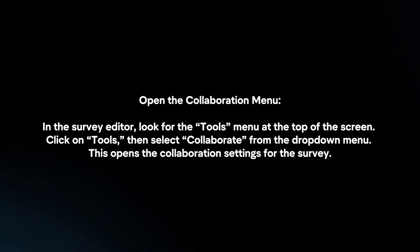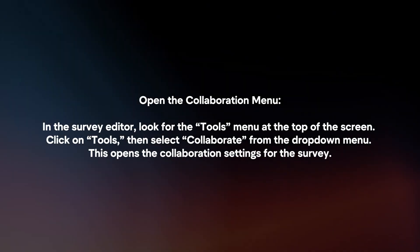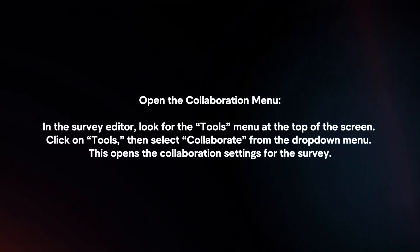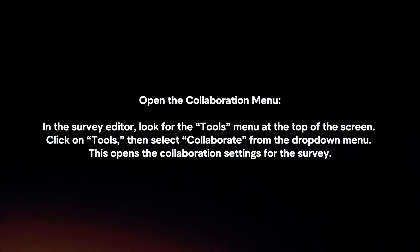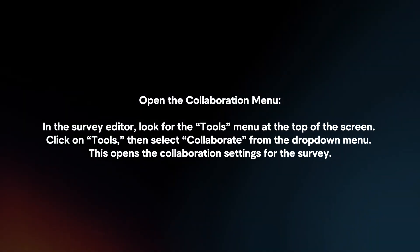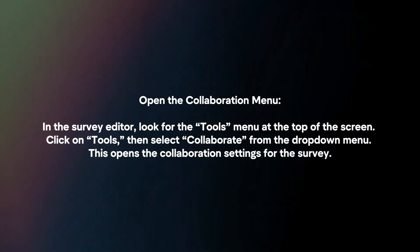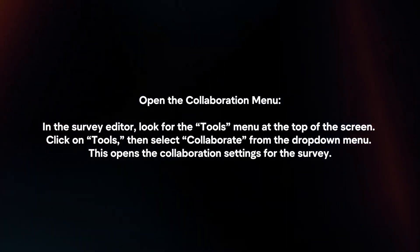Open the collaboration menu. In the survey editor, look for the Tools menu at the top of the screen. Click on Tools, then select Collaborate from the drop-down menu. This opens the collaboration settings for the survey.